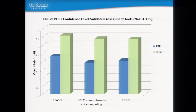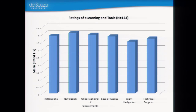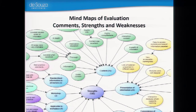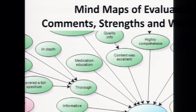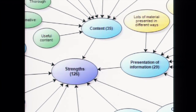Since we're not attached to any one specific hospital, we rely on facilitators from each organization to fill in the gaps of what is specific to that organization. These are some other samples of the reports we generate — pre- and post-confidence levels on assessment tools used, and ratings of our e-learning and tools. We explicitly ask: were the instructions clear? How easy was it to navigate the course? How was our technical support? And finally, text comments. When you get 100 feedback comments from students, it's hard to parse all of it together. With a research background, we have a research analyst that uses a program called NVivo to group these together — for example, all the comments around content. We know that it was useful content — informative, thorough — and we do the same thing for weaknesses to figure out what we need to change about our courses.